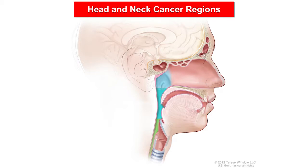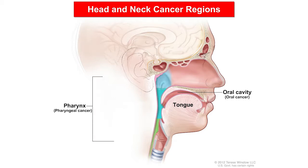There are five main types of head and neck cancer, each named according to the part of the body where it develops. They are oral cancer, which develops in the mouth, and pharyngeal cancer, which develops in the cavity behind the nose and mouth. This cavity is called the pharynx. There are three subtypes of pharyngeal cancer.